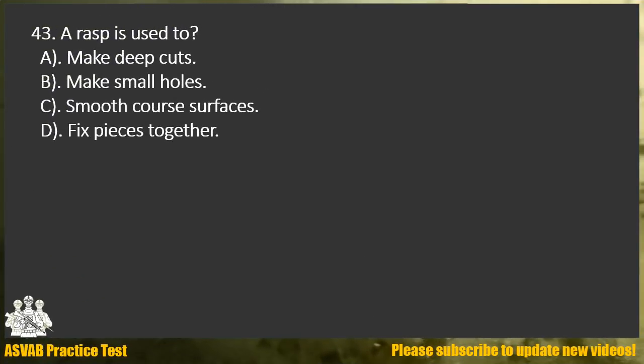Question 43. A rasp is used to: A. Make deep cuts. B. Make small holes. C. Smooth coarse surfaces. D. Fix pieces together.